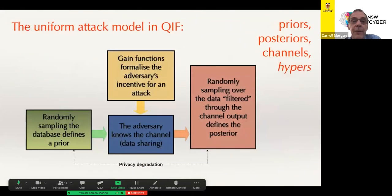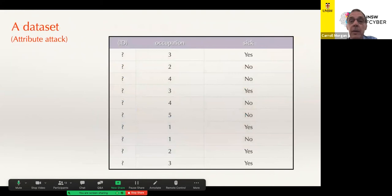So the QIF approach to this has four basic keywords. Three of which it shares with most other work in this area and the fourth one in italics there. Hypers is a new contribution from QIF which I will illustrate in a moment. The prior is what you know beforehand. The posterior is what you know by making your inquiries. The channels are the way the information gets out and the hypers are the way that we process it.